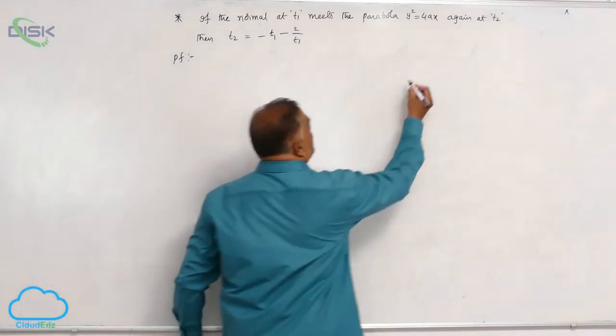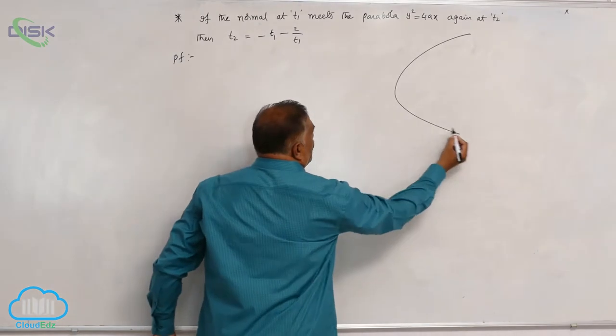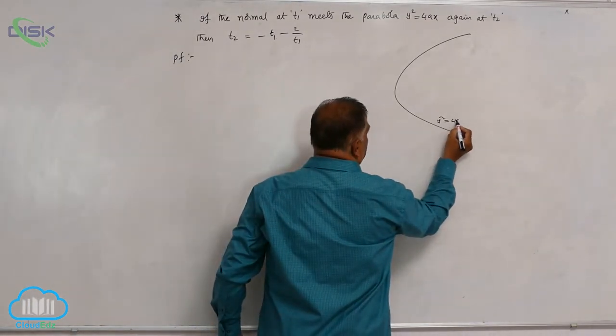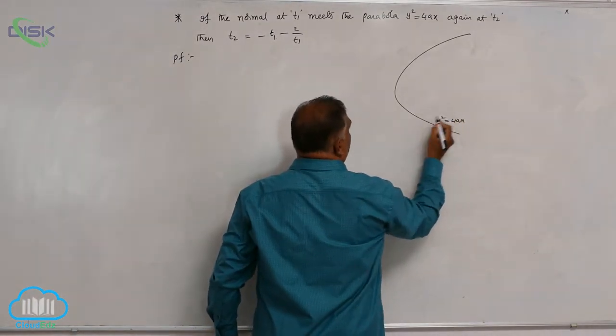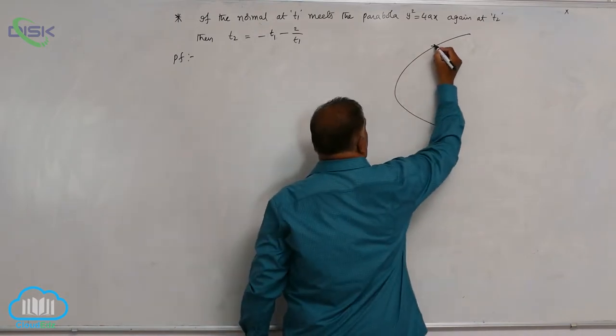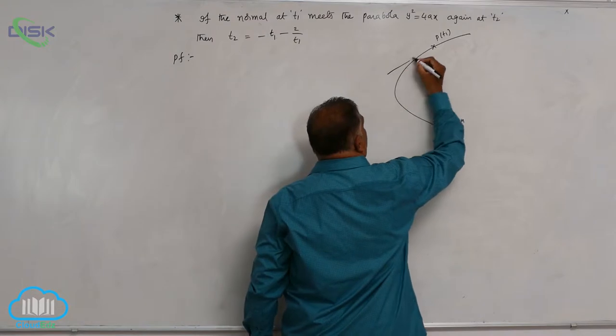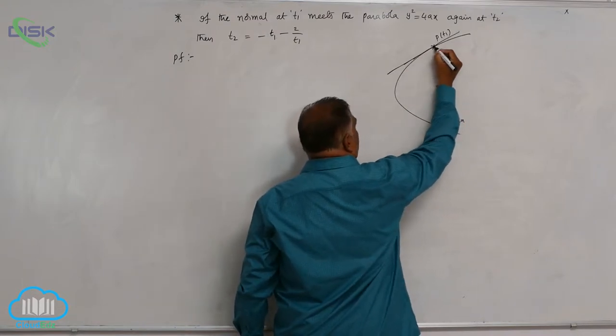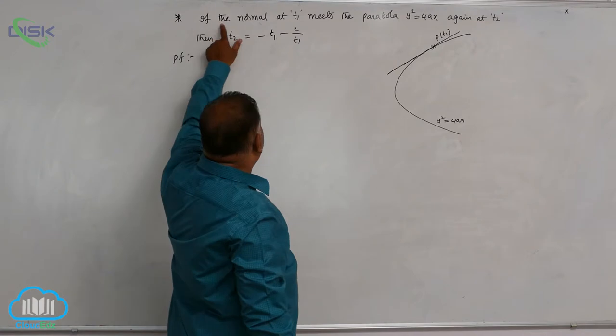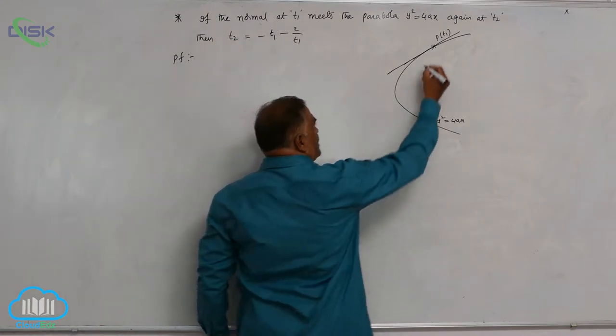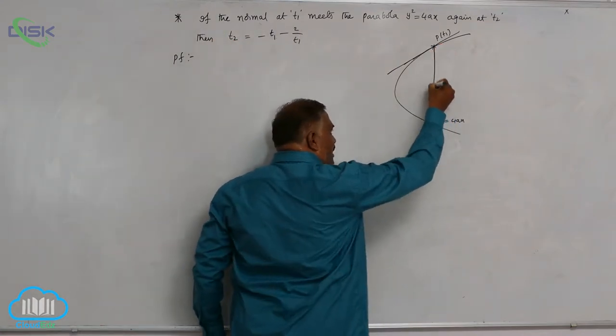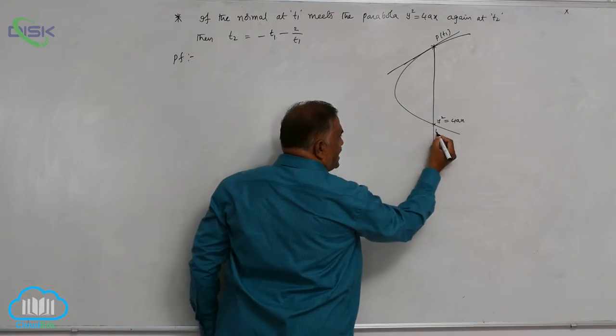Let us draw the diagram. This is the parabola y² = 4Ax. Let us say the point P is at T1 here. This is going to be a tangent and this is the normal. The normal at T1 meets the curve again at T2.